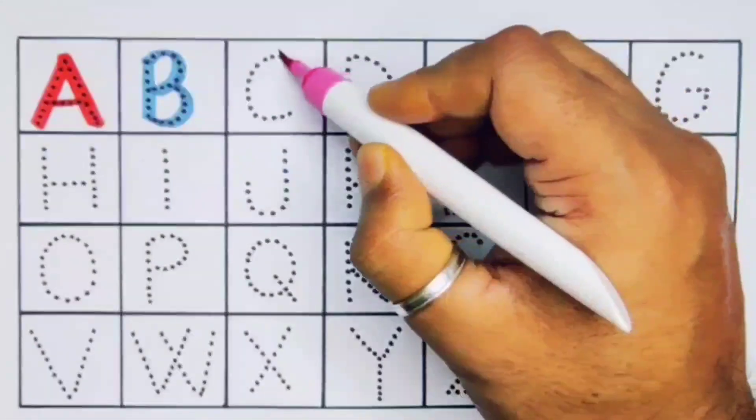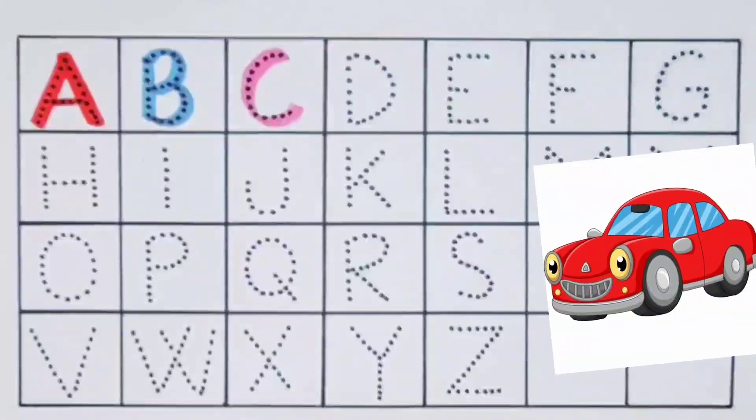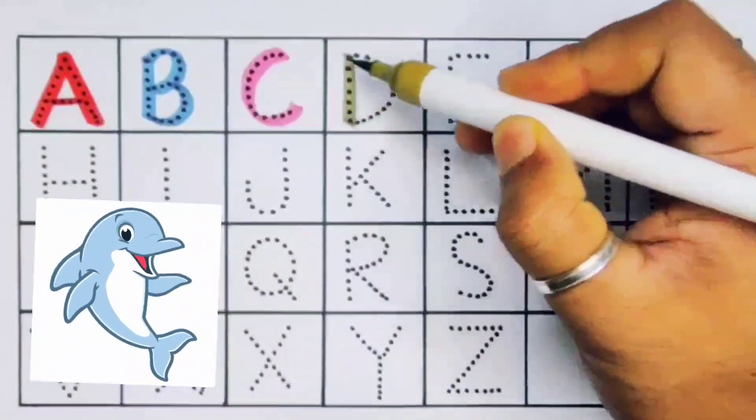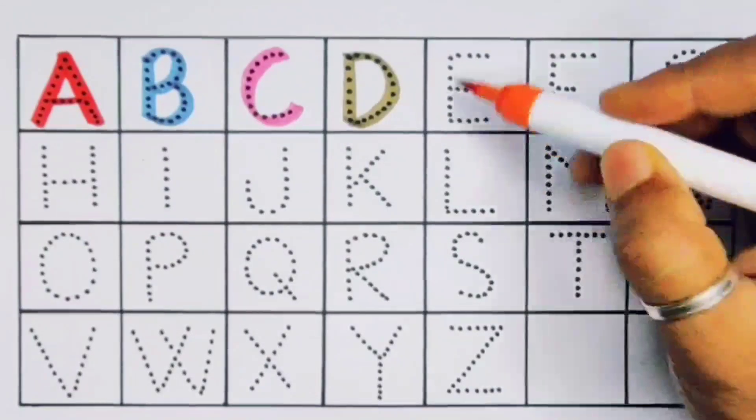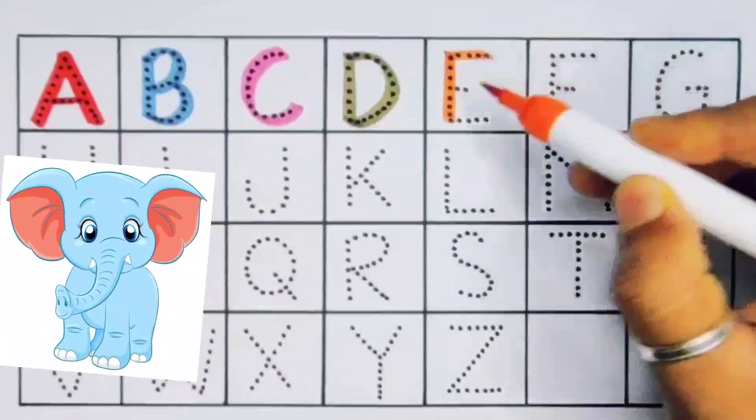Next C, C for car, C for car. Next D, D for dolphin, D for dolphin. Next E, E for elephant, E for elephant.